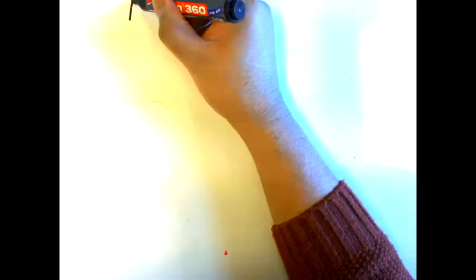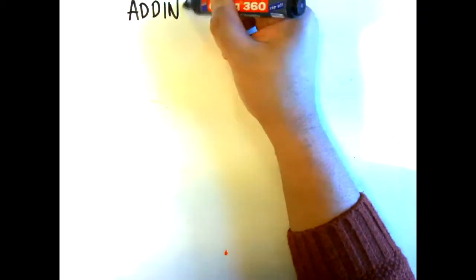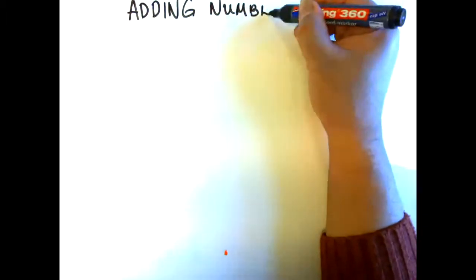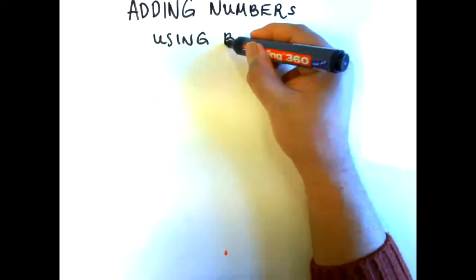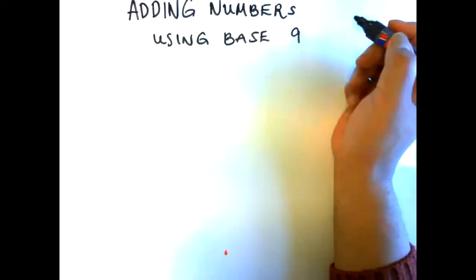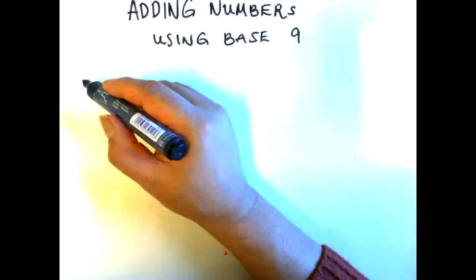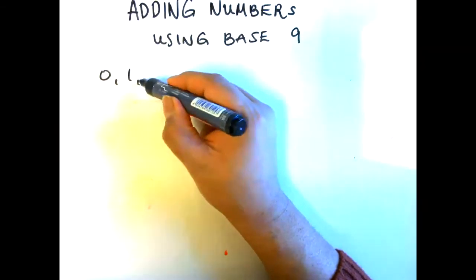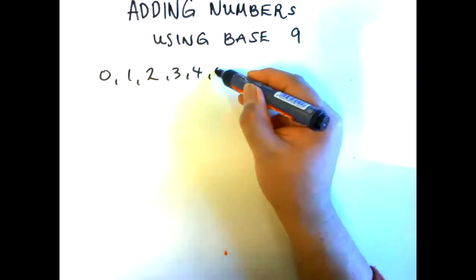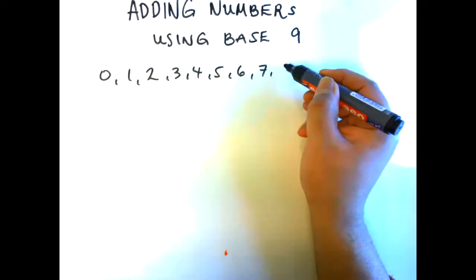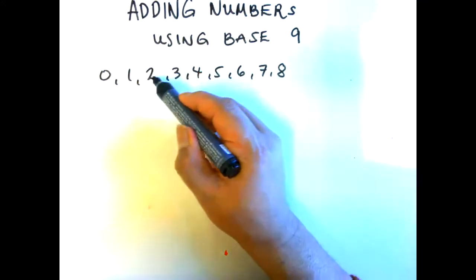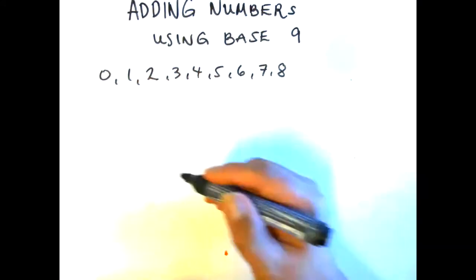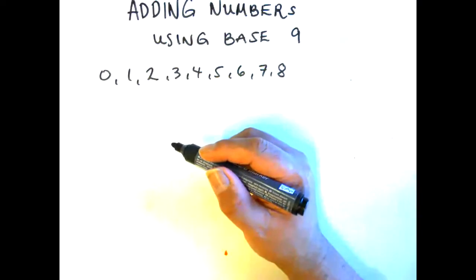We're going to talk about adding numbers using the base 9 counting system. In base 9, you're only allowed 9 symbols — 0, 1, 2, 3, 4, 5, 6, 7, and 8. We don't have the symbol 9, so we count 1, 2, 3, 4, 5, 6, 7, 8, and then we move to the next place.